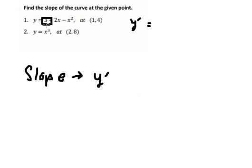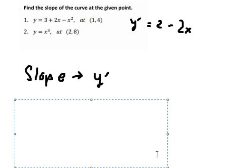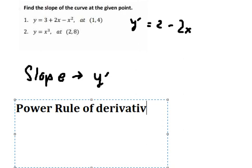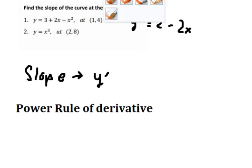The derivative is zero because this is a constant. For the other terms, we apply the power rule of derivatives. So the derivative y' = 2 - 2x.